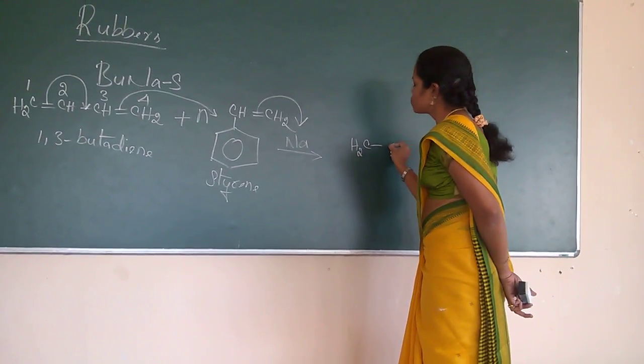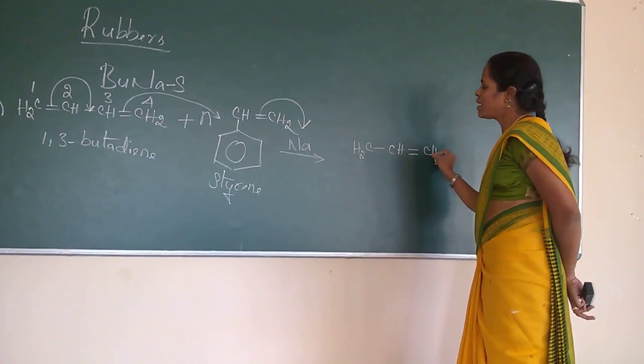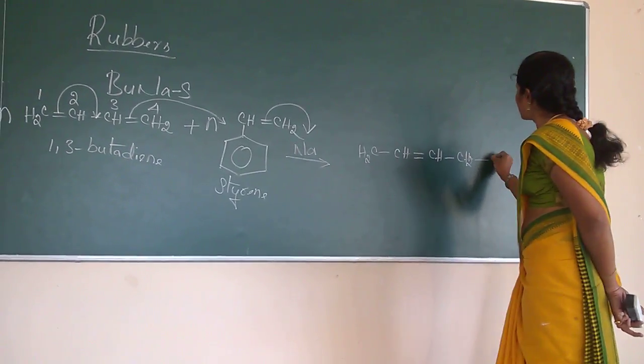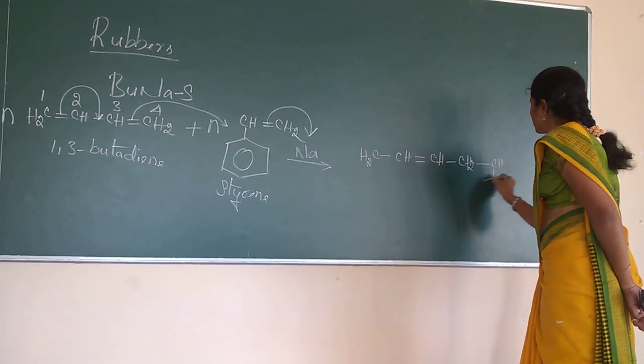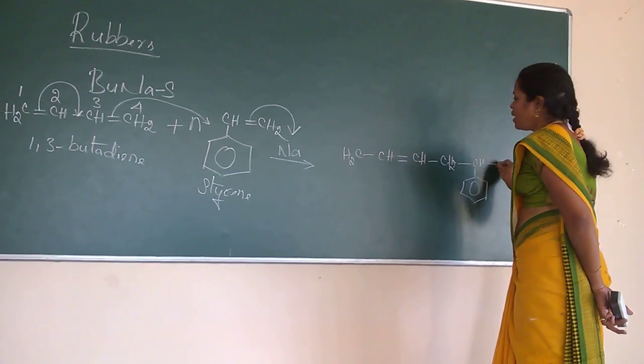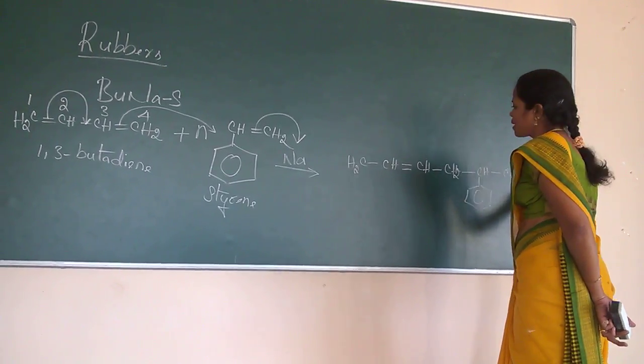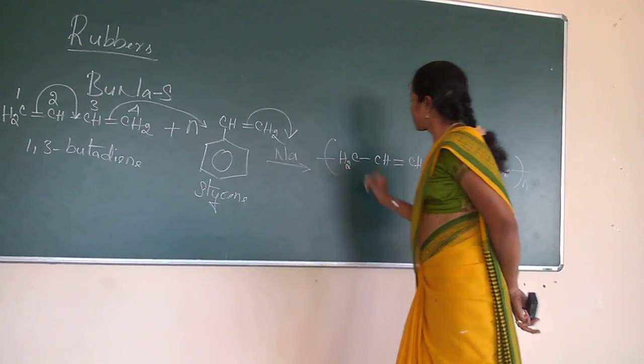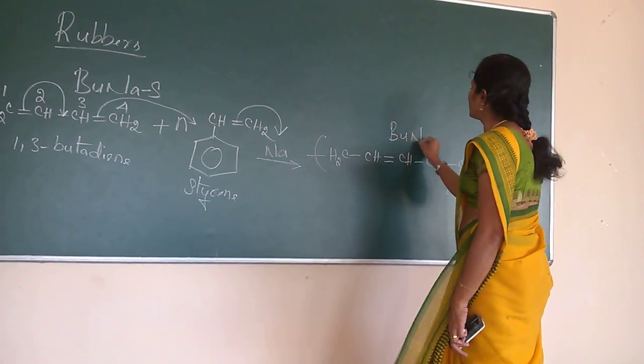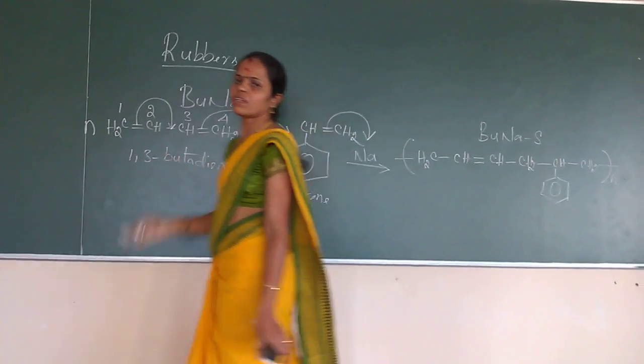CH2, single bond, CH double bond, CH single bond, CH2, single bond, CH. It is connected with the benzene ring here and here CH2, single bond, N types. So this is nothing but Buna-S. So this is example for synthetic rubber.